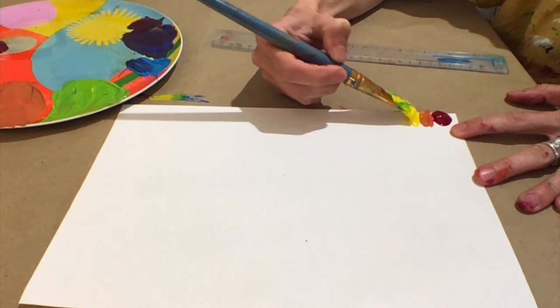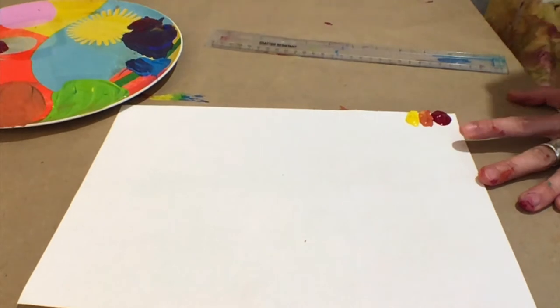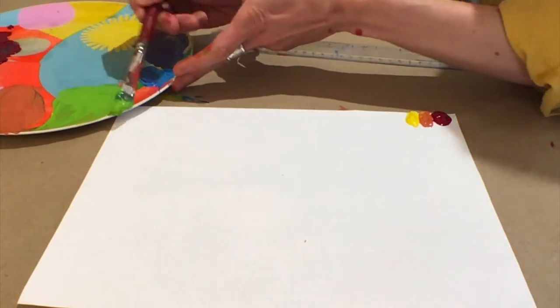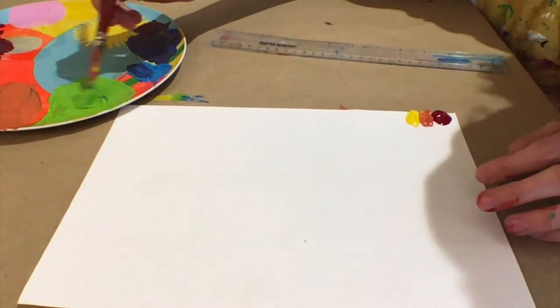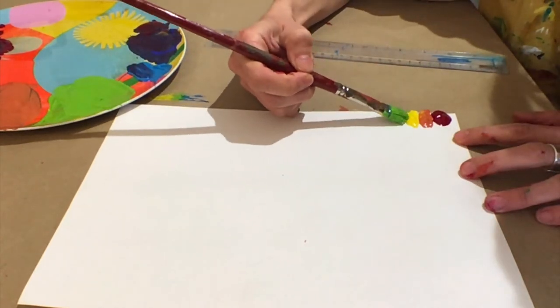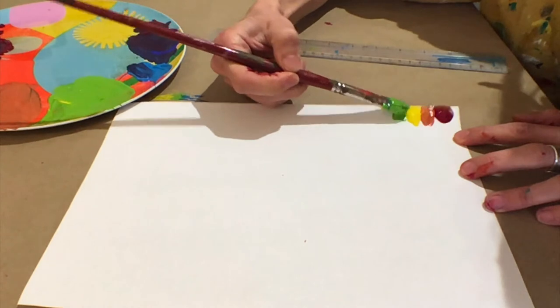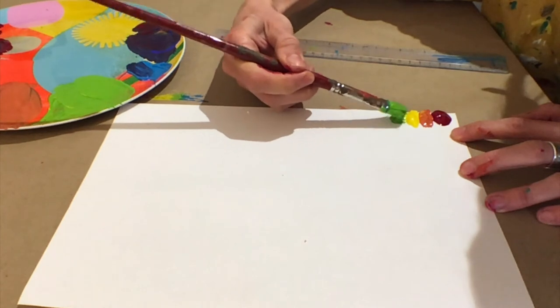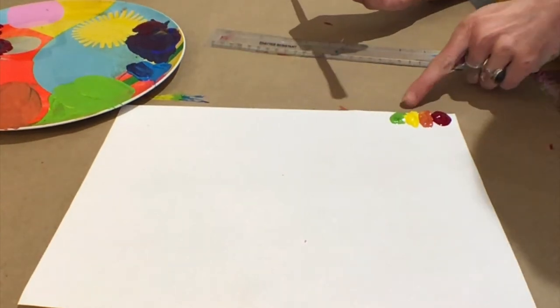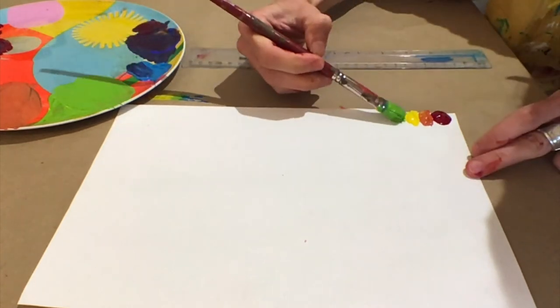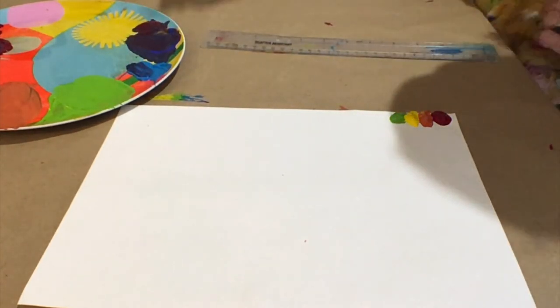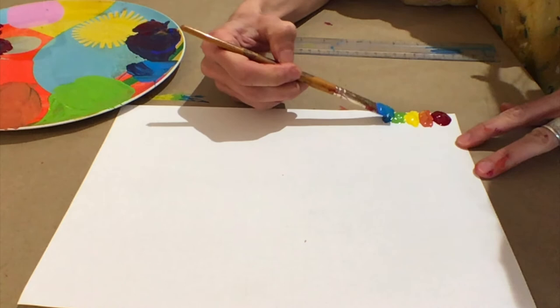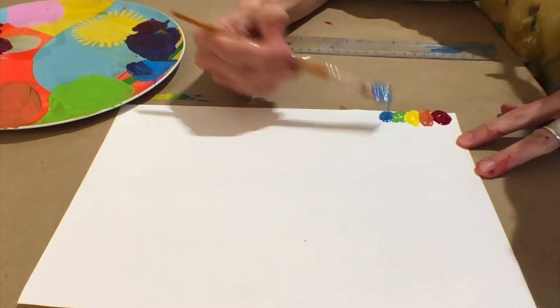After that it is our green. So which two colors do you need to make green? Yellow and blue. That's it. Yellow and blue. Oh, need a bit more paint. So try and get the amount of paint on each section similar and the gaps roughly the same. After that it is blue. A nice big blob of blue like that.